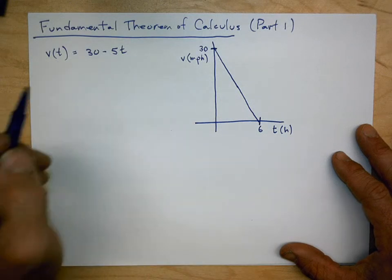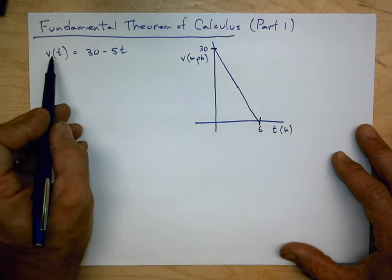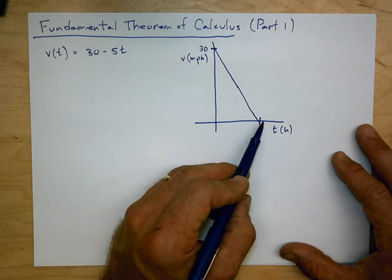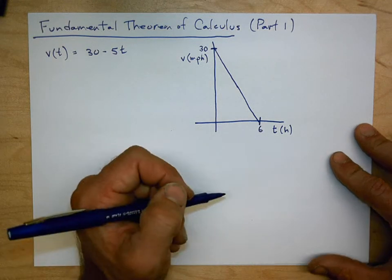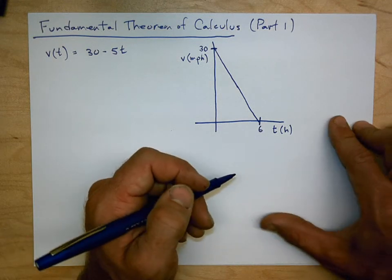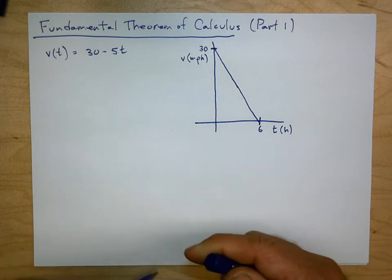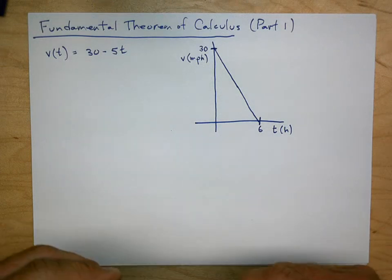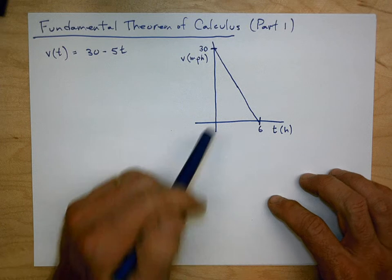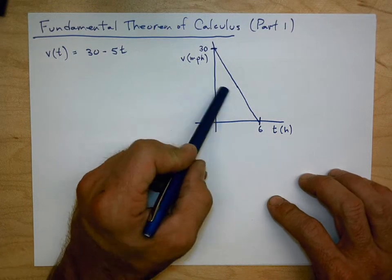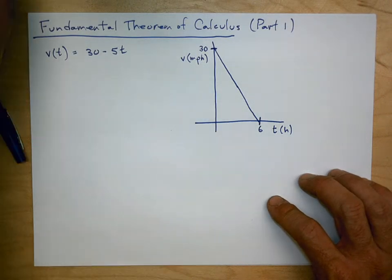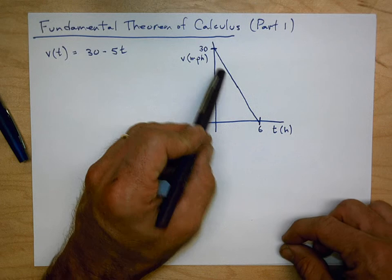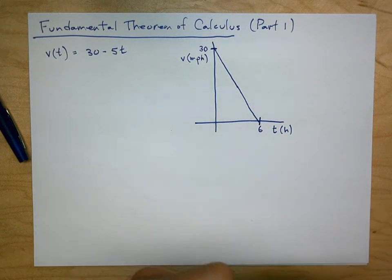The question is: if this is my velocity over these 6 hours, how far did I travel during those 6 hours? There are at least two ways to approach this. One is to find the area under the curve. Let's think about why that makes sense — why the area under this curve would give us the distance.